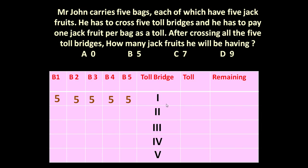As soon as he crosses the 1st toll bridge, he will pay 5 jackfruits as toll tax — 1 jackfruit per bag. So remaining jackfruits will be 20, because initially he had 25 jackfruits. Now he is left with 20.